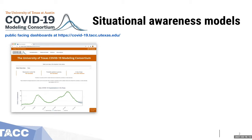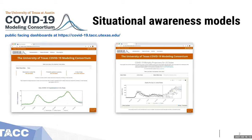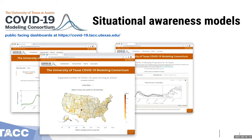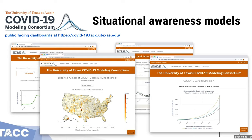This first screenshot I'm showing you is of the hospitalization projections dashboard for the state of Texas. There's also a dashboard projecting mortality across all 50 states in the US, an additional dashboard that tries to estimate the number of introductions you would expect if you had schools open at a given classroom or pod size, to give parents and educators some sense of the risk of engaging in in-person education.